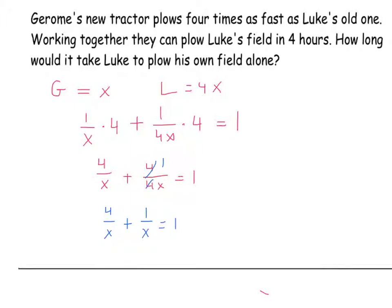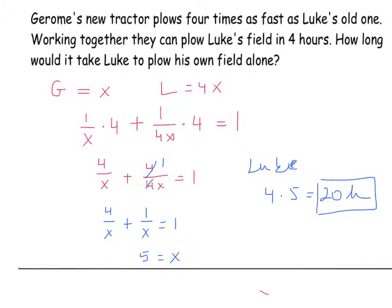So 5 equals x, meaning Jerome needs 5 hours to plow the field. Luke, being 4 times slower, would need 4 times 5 equals 20 hours to plow the field by himself.